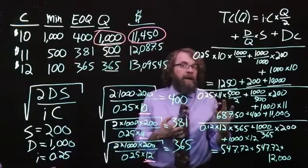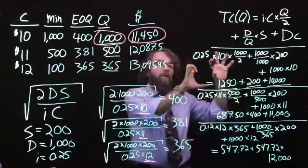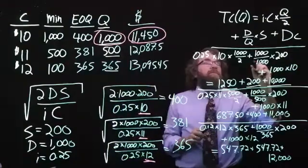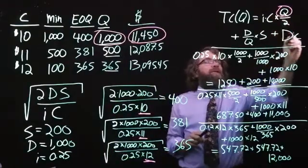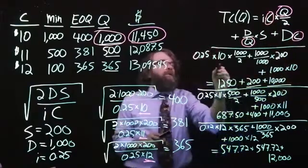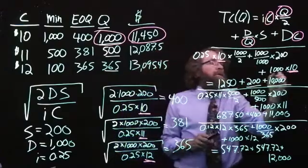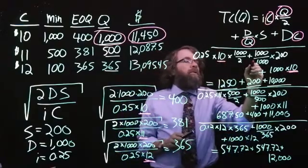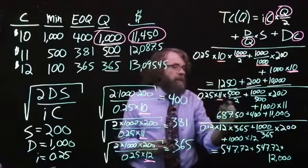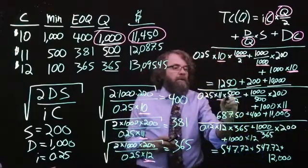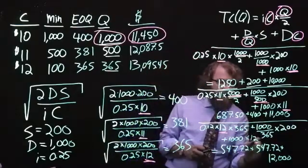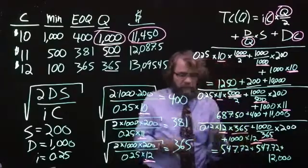Again, I would just like to highlight the differences, what changes when we go from one iteration of the cost calculation to the next. All that changes is the order quantity is changing and the cost of the goods are changing. So the cost here, the cost here, the order size here, and the order size here. And then the next time it goes to $11, it goes to $11, it goes to 500 units, it goes to 500 units. And then the last time it goes to $12, it goes to $12, it goes to 365 units and 365 units.